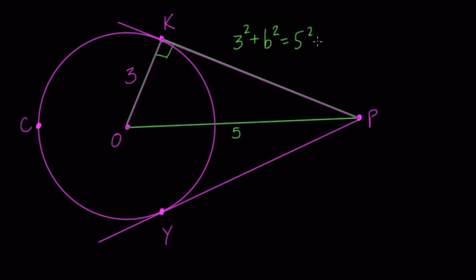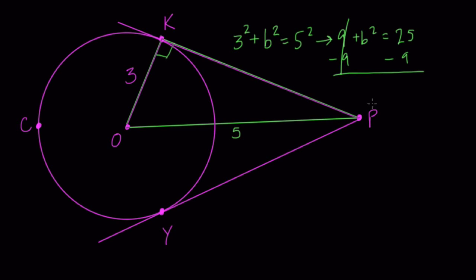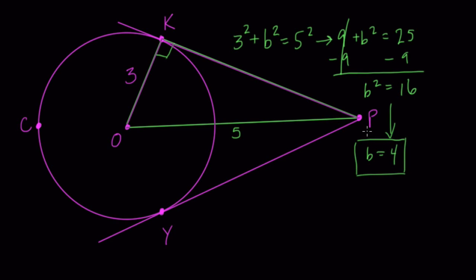So we solve for B squared. 3 squared is 9, plus B squared equals 25. Subtract 9 from both sides: B squared equals 16. Take the square root of both sides and B equals 4. You can also recognize this is a 3, 4, 5 triangle — a classic right triangle. So this tangent line is 4.